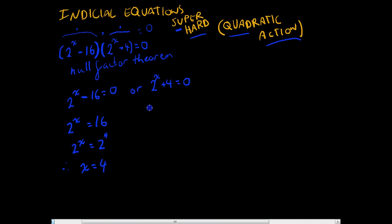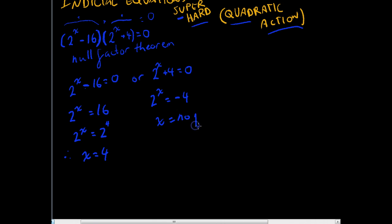Now, here's our or. 2 to the x equals negative 4. And when you look at that, 2 to the power of something equals negative 4, it's not possible. That means that x has no real solution there. So, in this particular case, there's only one answer for this: x equals 4.